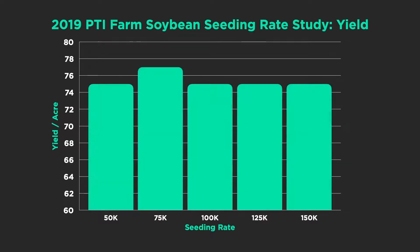Here's the data: we planted 50,000 seeds per acre all the way up to 150,000 in 30-inch rows — a 3x seeding rate range. At the end of the day, yield-wise our highest yield came in from 75,000 seeds per acre on these soybeans. These were Asgrow 36x6 soybeans, planted in June — fairly late.